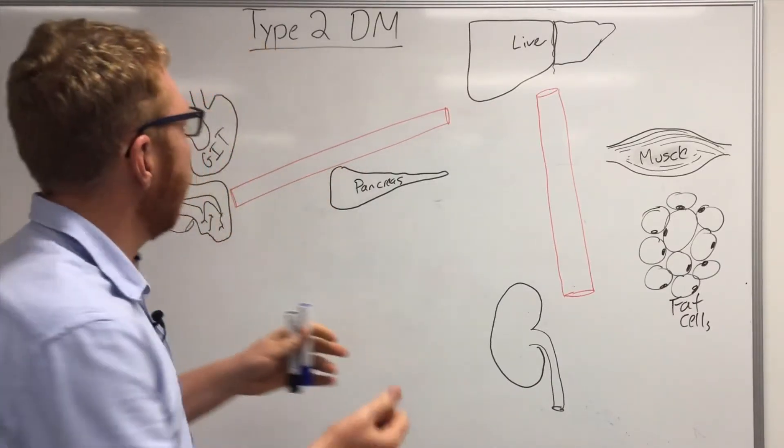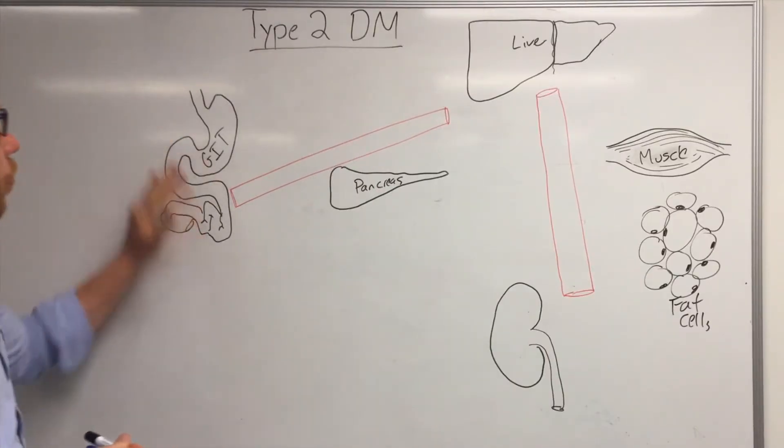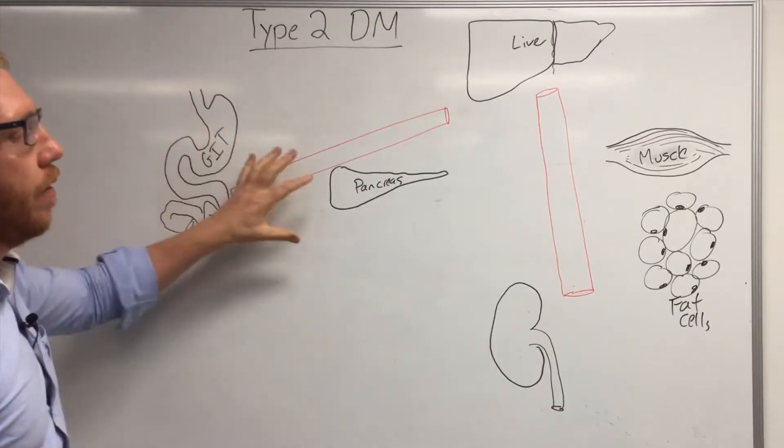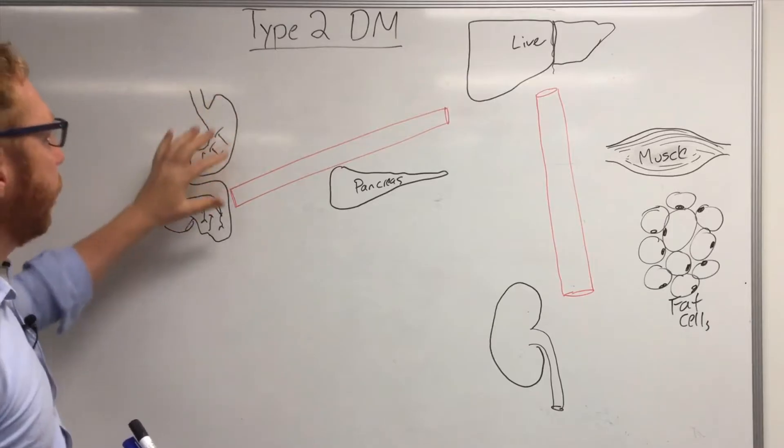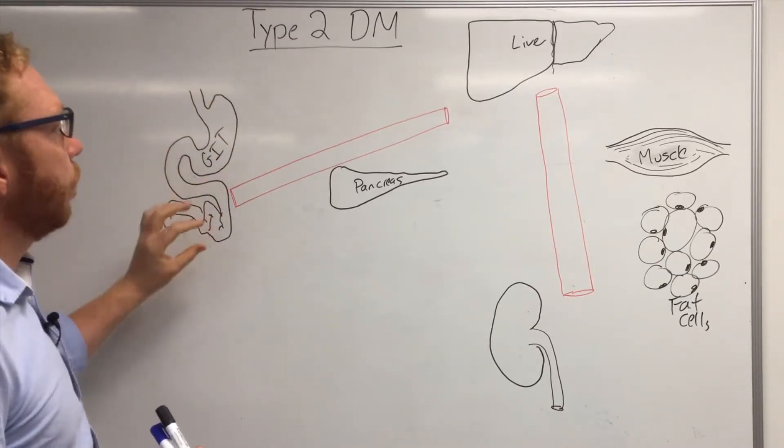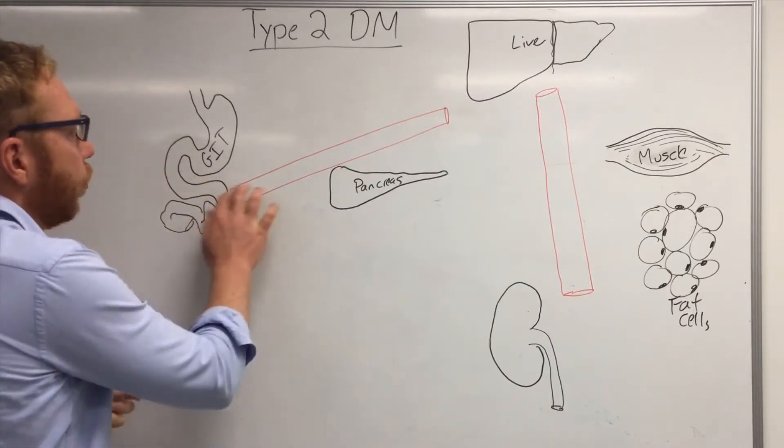So firstly let's go into how the system works normally. With your gastrointestinal system, you ingest food, in this case we'll talk about carbohydrates. So you ingest food like starches, breads, potatoes or pasta and it's broken down in your GIT and absorbed into the blood.